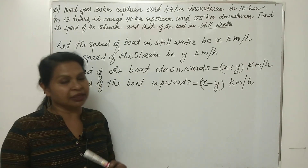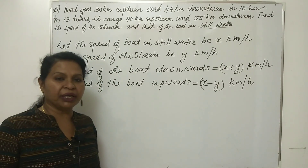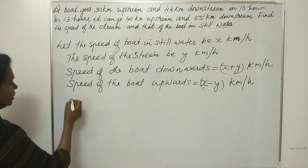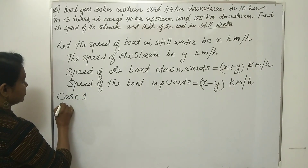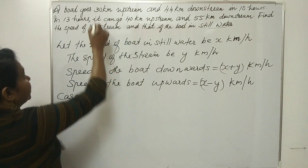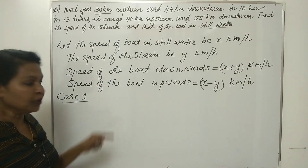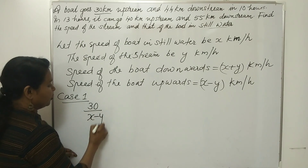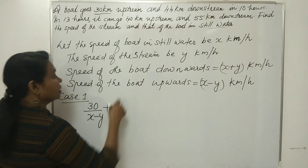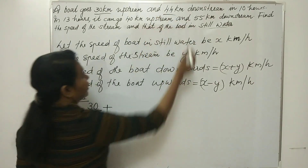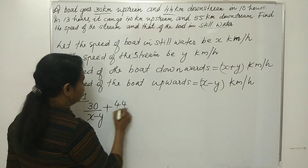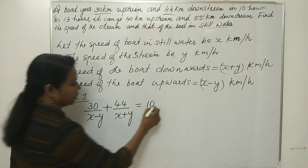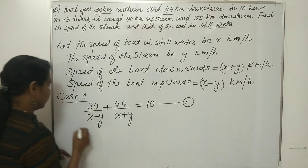Time is calculated using physics: speed multiplied by time is distance, so time taken is distance divided by speed. Case 1, in equation form: 30 km upstream and 44 km downstream in 10 hours. Similarly, case 2 in equation form.